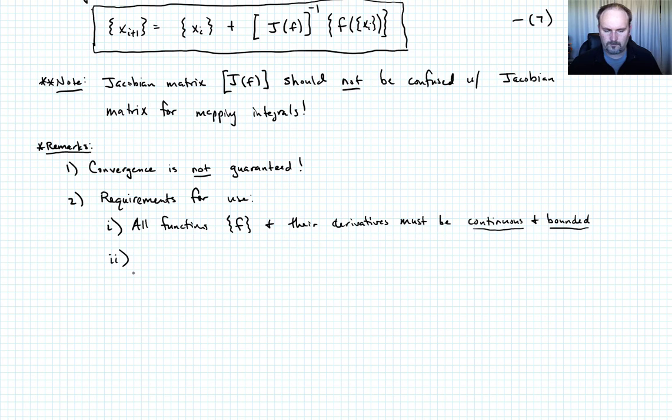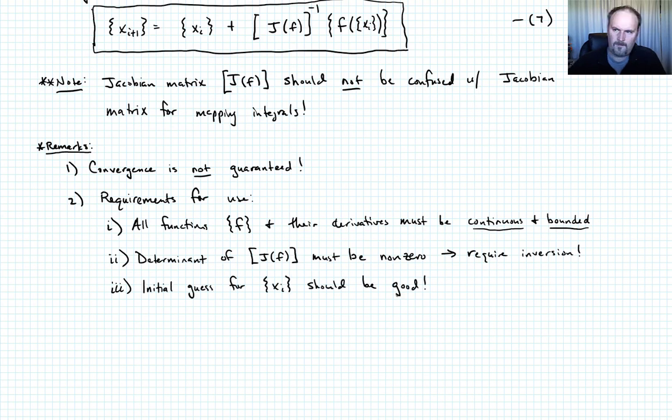Number two, the determinant of J must be non-zero. Why? Because we require it to be invertible. Hopefully, you remember from linear algebra, you can't invert a matrix if its determinant is equal to zero. And then the third, a little harder to define and harder to enforce, but your initial guess for X sub i should be good.